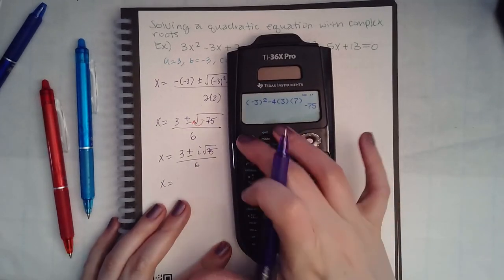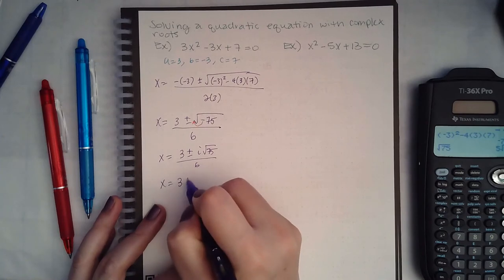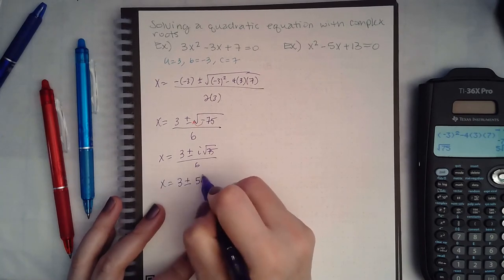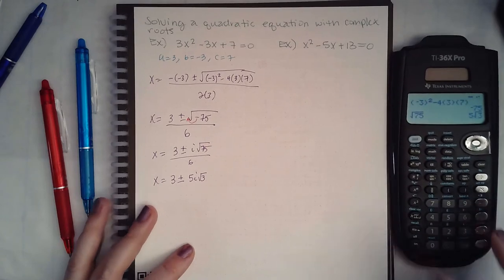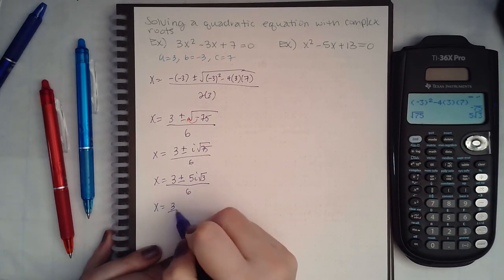The square root of 75 actually simplifies, so it's actually 5i square root of 3 over 6.